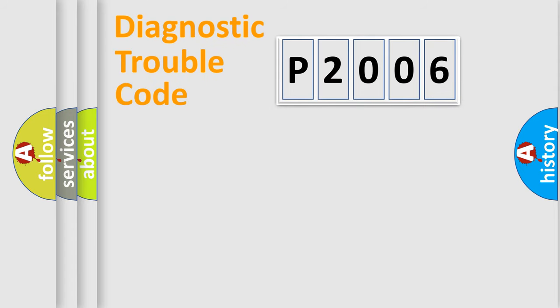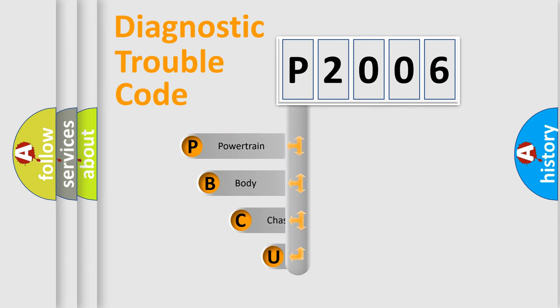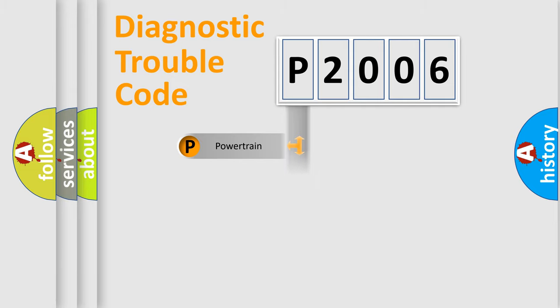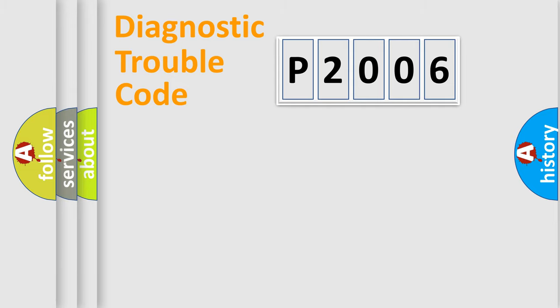Let's do this. First, let's look at the history of diagnostic fault code composition according to the OBD2 protocol, which is unified for all automakers since 2000. We divide the electric system of the automobile into four basic units: Powertrain, Body, Chassis, and Network.